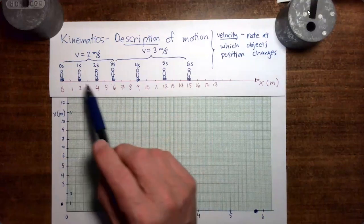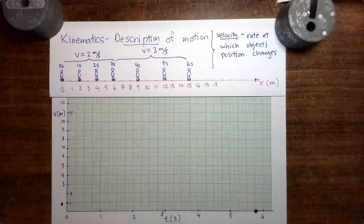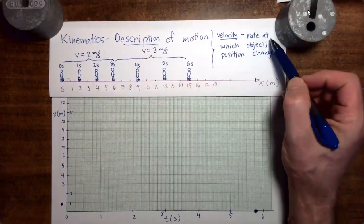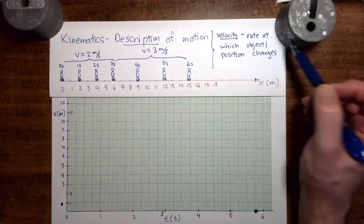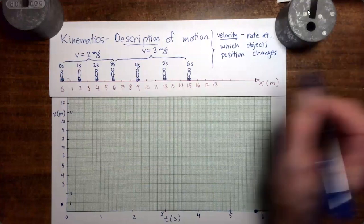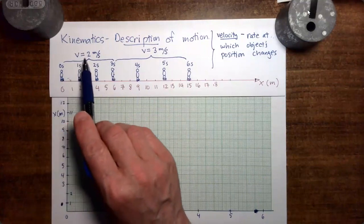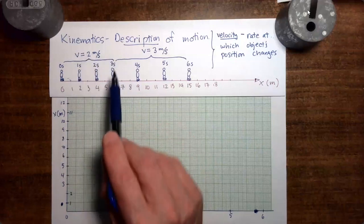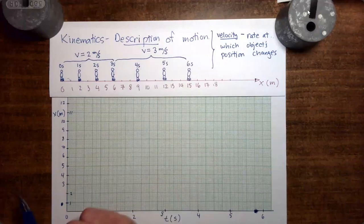In the previous video, we were studying the motion of a person walking along the x-axis, and by contemplating what this person was doing, we came to the idea of velocity. The velocity is the rate at which the position of an object changes. So in the first three seconds of motion, this person has a velocity of 2 meters per second, and in the last three seconds of motion, this person has a velocity of 3 meters per second.